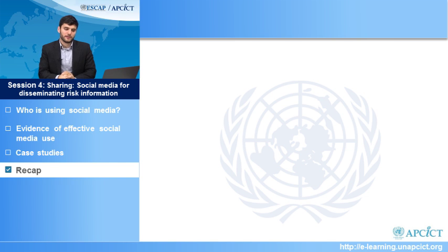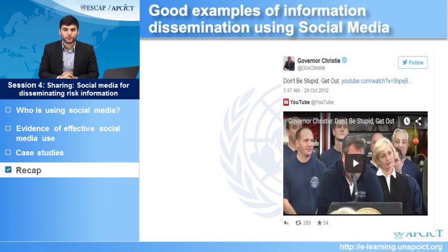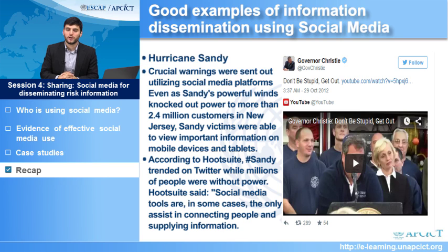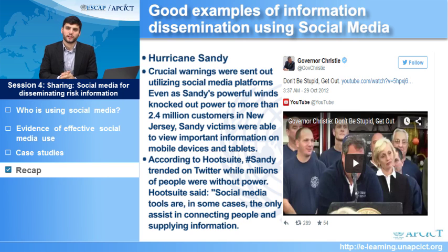Another good example of information dissemination using social media was during Hurricane Sandy. During the hurricane, a massive amount of Twitter information was shared and social media was used as a vital source of risk communication when many of the areas affected by the disaster lost communication using traditional sources. Best practices were shared, as well as information related to crucial places where one could go to get aid if they were in need of assistance.